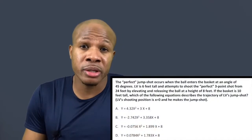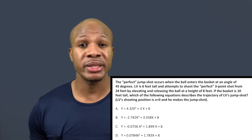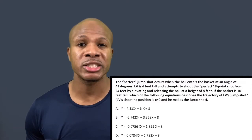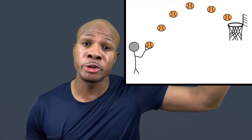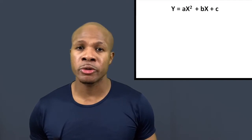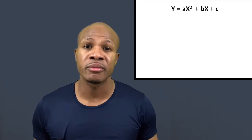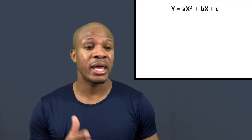LV took the shot and the trajectory is one of the given equations — we need to find which one. The ball follows a parabola, which is a quadratic equation: a second-degree polynomial of the form ax² + bx + c, with three unknowns a, b, and c. We have two pieces of information: the release point (0, 8) where he released the ball at eight feet, and the basket location (24, 10) since he made the shot.